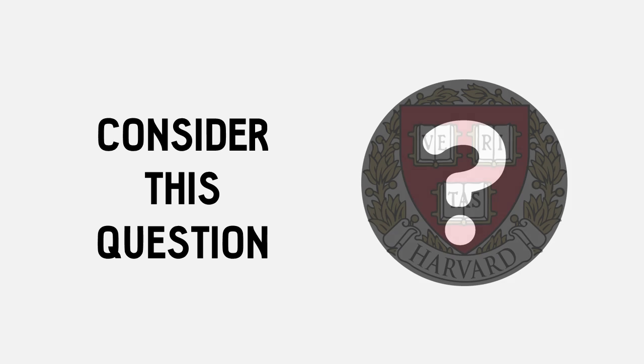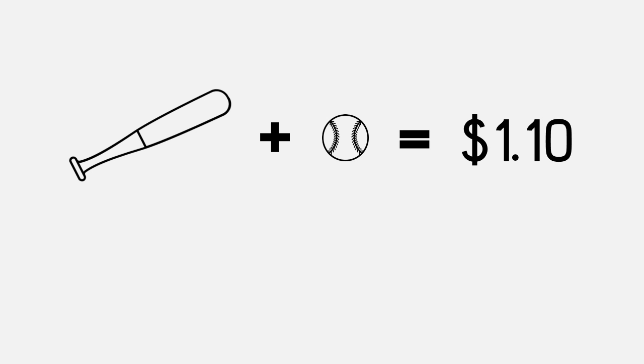Consider this simple question that more than 50% of Harvard students got wrong. A bat and a ball costs $1.10. The bat costs $1 more than the ball.